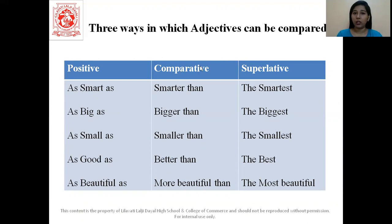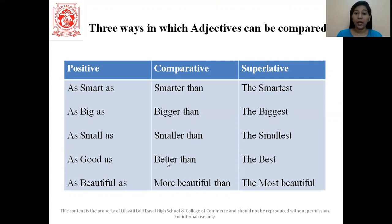In the comparative degree, we will use the comparative form of our adjective along with the word 'than'. So 'smart' becomes 'smarter than', 'bigger than', 'smaller than', 'better than', 'more beautiful than'.